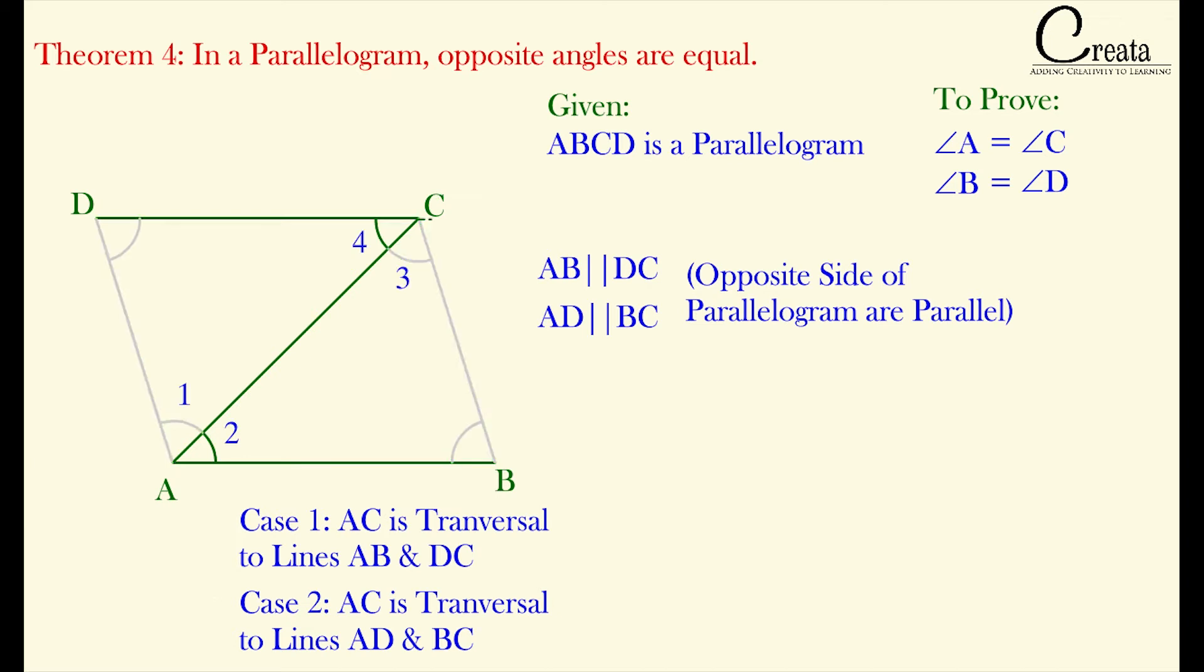Let's check the first case. Can we say angle 2 is equal to angle 4? Because it is the case of alternate interior angles. AB is parallel to CD, and we know in the case of parallel lines cut by a transversal, the alternate interior angles are equal to each other. So we got angle 2 is equal to angle 4.